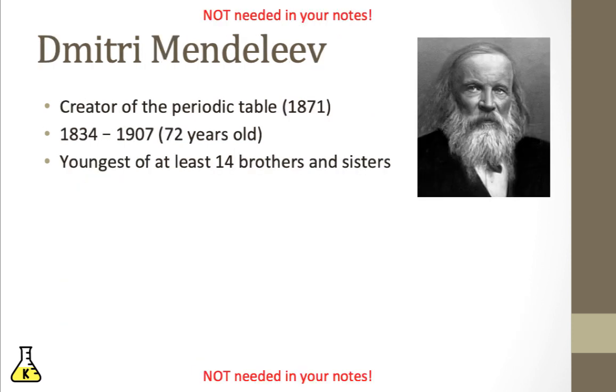Now, before we dive into some of the details of the periodic table, let's talk about its creator, Dmitry Mendeleev, one of Russia's most famous scientists. He is the creator of the periodic table, which happened in the year 1871. He himself was born in the year 1834 and lived to the year 1907, at the ripe old age of 72. He was the youngest of at least 14 other brothers and sisters, although the exact number of siblings he had is something that is up for debate.